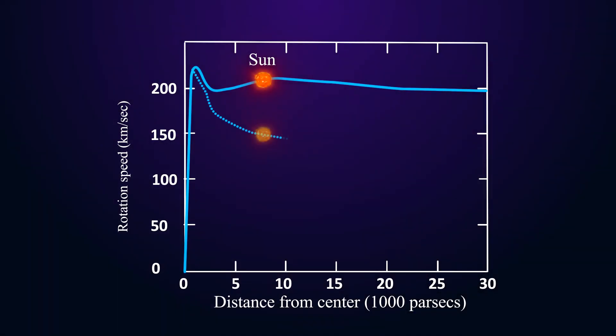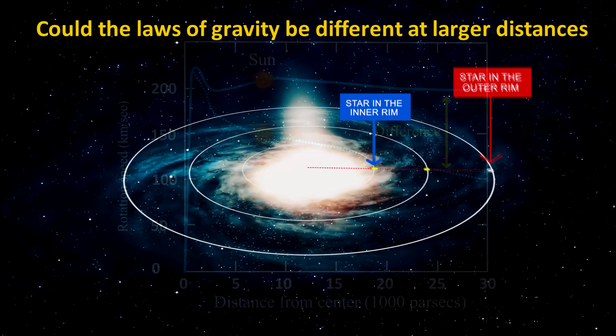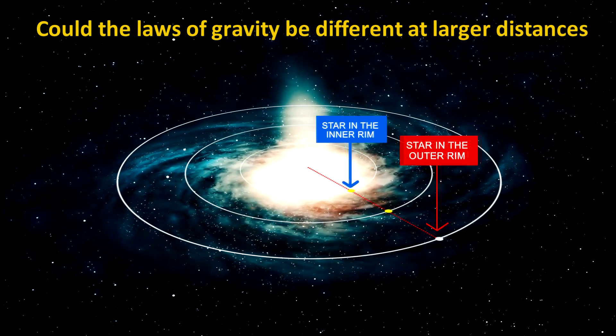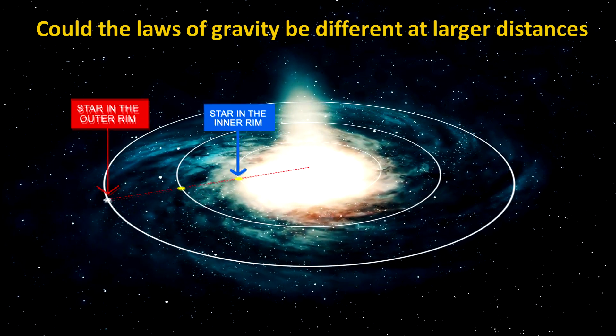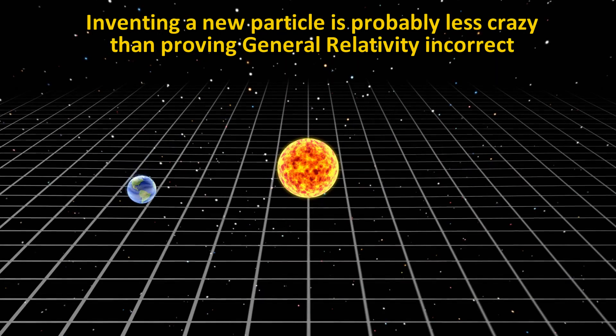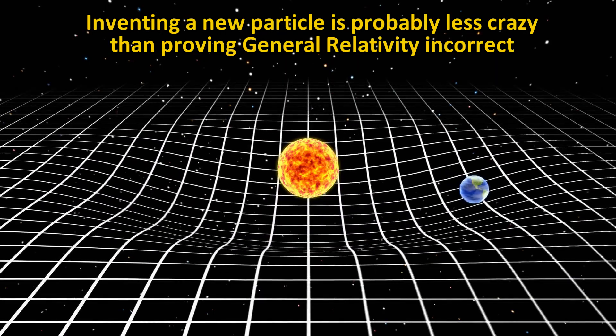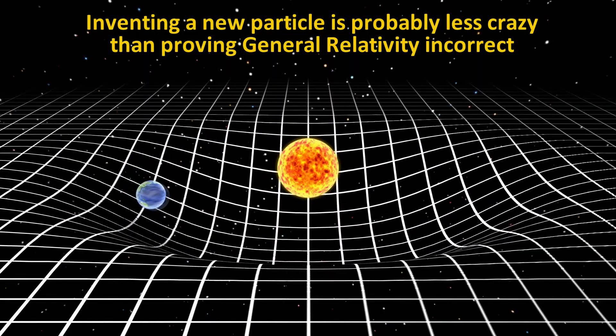There are some physicists who have argued that dark matter doesn't really exist, and that rotation curves can be explained if the laws of gravity were different at larger distances. Again, this behavior in the bullet cluster would be hard to explain if that's the case. Inventing a new particle is probably less crazy than proving the laws of gravity wrong, given the mountains of evidence that prove Einstein's general relativity is correct.